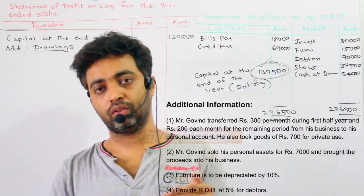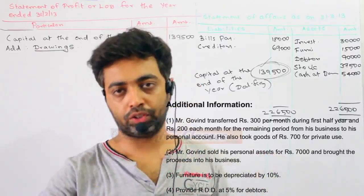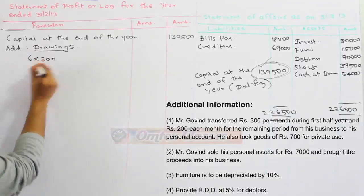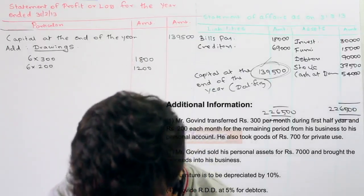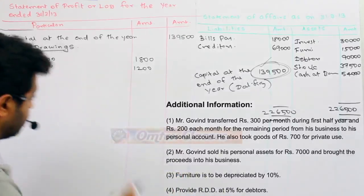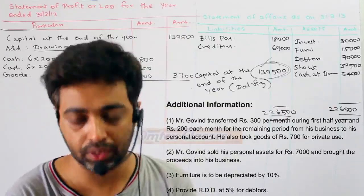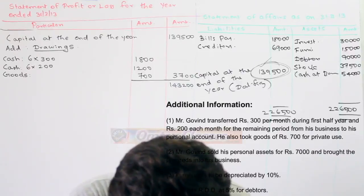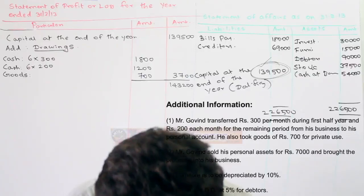In one year, the first half year means the first 6 months and the next 6 months. In the first 6 months, Rs.300, and in the next 6 months, Rs.200. God has also been withdrawn — he also took goods for $700 for private use. In the adjustment, it is given that Mr. Govind sold his personal asset for Rs.7000 and brought the proceeds into his business.